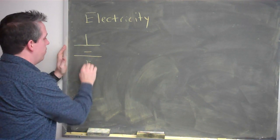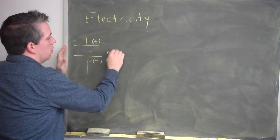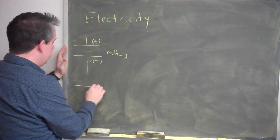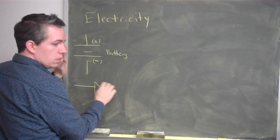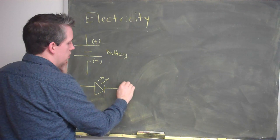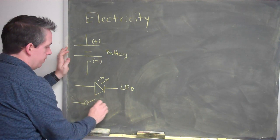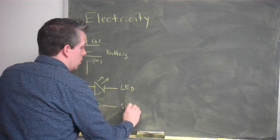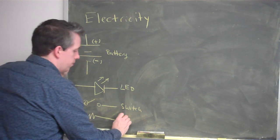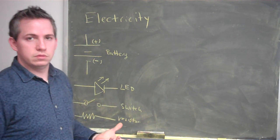The first thing is if I have a battery, this would be the negative side and this would be the positive side of the battery. If I have an LED light bulb, it would look something like this. If I have a switch, it would look like this. And lastly, if I have a resistor, it would look like this. A resistor just adds resistance — that's basically its primary purpose.